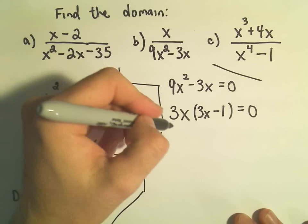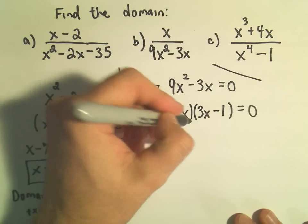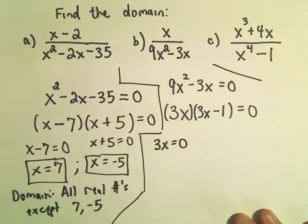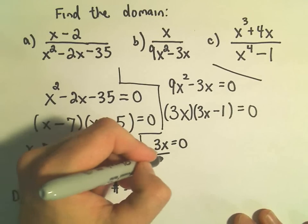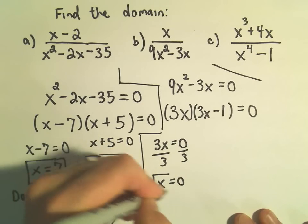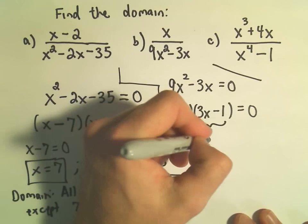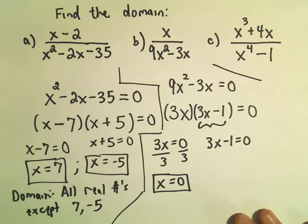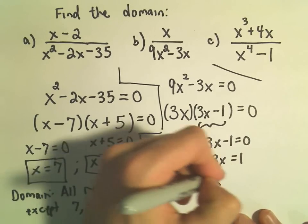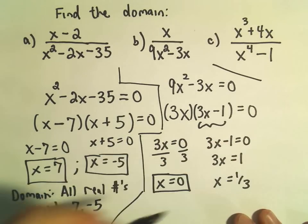And again, we just set each part equal to zero, each factor. So if we set 3x equal to zero, if we just simply divide both sides by 3, we would get x equals zero. And if we set the 3x - 1 equal to zero, well, I could add 1 to both sides, and then we could divide by 3. We would get x equals one-third.